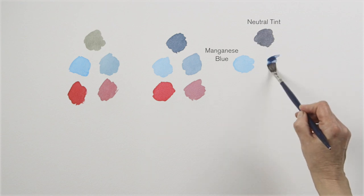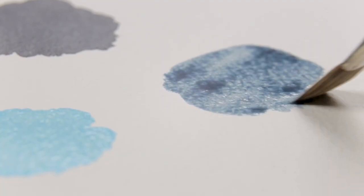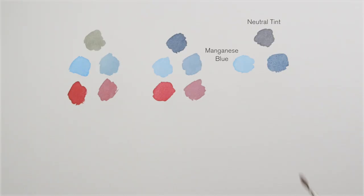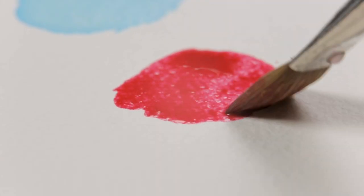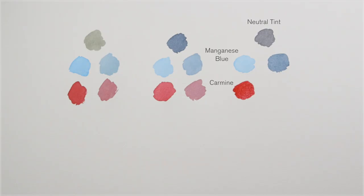Look what happens to the manganese blue hue when I add the neutral tint to it. Once more look at the way it alters the carmine.